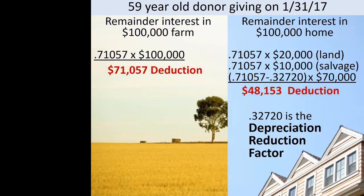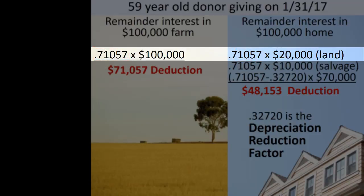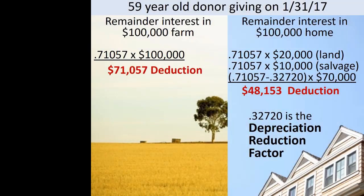How is this deduction calculated? Part of the value of the personal residence is the value of the land on which the residence sits. The deduction for this part is calculated exactly like the deduction for the farmland. Thus, the remainder interest gift generates a deduction of 71.057% of the value of the land underlying the personal residence. There is also presumed to be an element of the house that does not depreciate, referred to as salvage value.